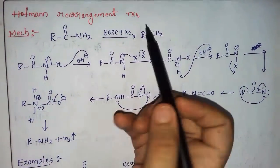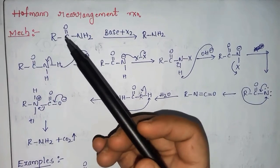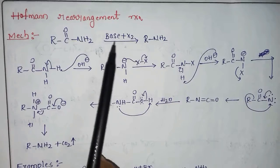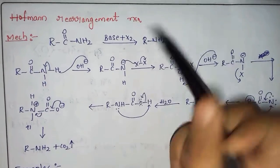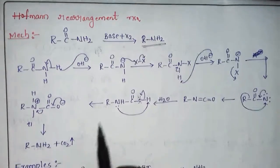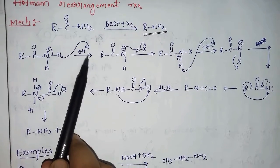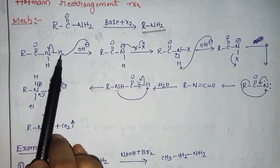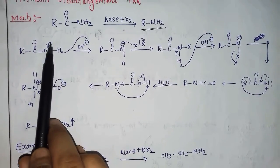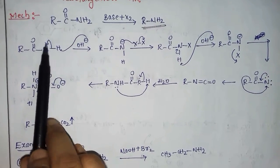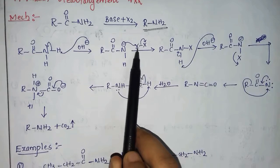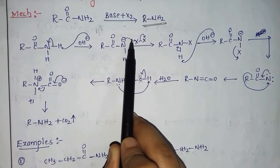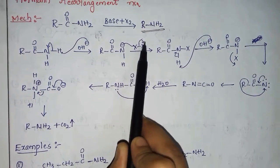Now we will see the mechanism of the Hofmann rearrangement reaction. Mechanisms are very important to understand the reaction properly — you can copy this in your notes. The reactant and reagent are given, and this is the main product. First step: the base always abstracts a proton, so it abstracts the proton and a negative charge develops on nitrogen.